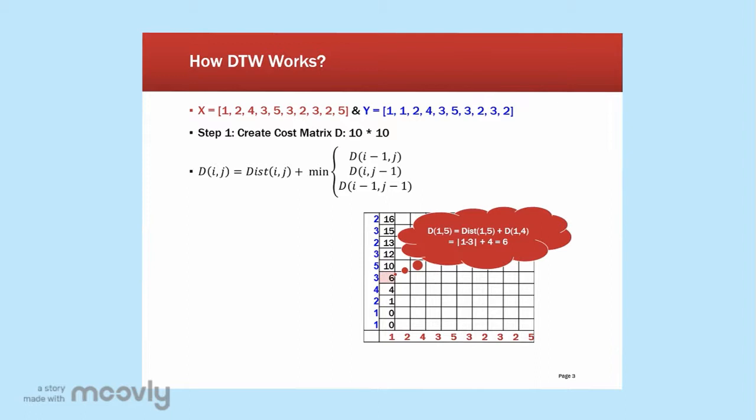With similar technique, we can calculate all the other values in the same column. Maybe we will take a look at this 6 and figure out how it comes from. First, we apply the formula to calculate the distance, which is 3 minus 1, which is 2.